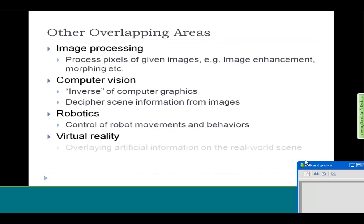There is also virtual reality, which is basically overlaying some artificial information on the real world scene. You wear some sort of goggles — like a computer screen on your eyes — and depending on what you see through those goggles, it can project certain objects. It gives you the impression that something is placed on a table even if it is not; it is just an image on your eyes. That is virtual reality, and it obviously has a lot in common with computer graphics.